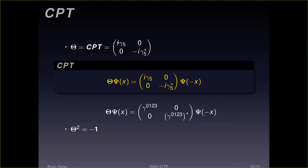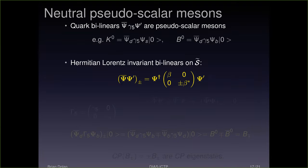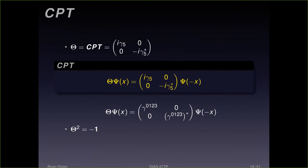Acting on Dirac spinors, theta completely inverts the spacetime point at the spacetime origin and multiplies by a gamma matrix for every coordinate: gamma-naught, gamma-1, gamma-2, gamma-3. This is the combination of CPT, and necessarily theta-squared is minus one. This is one of the key ingredients in the proof of the CPT theorem. You then go on to apply this to fermion bilinears and prove that all possible physical bilinears are invariant under CPT.